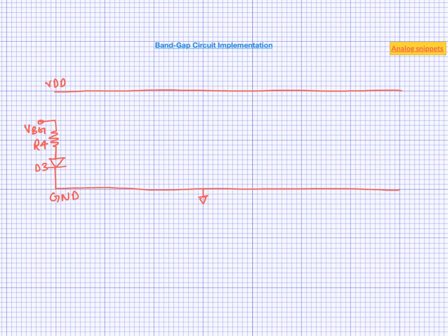Let's start with the branch which will generate our final output. We already know that PTAT voltage will appear across resistor R4 and the CTAT voltage would appear across diode D3. The current in this branch would be a PTAT current, and we would require a PTAT current source in form of a PMOS transistor on top of the reference voltage.